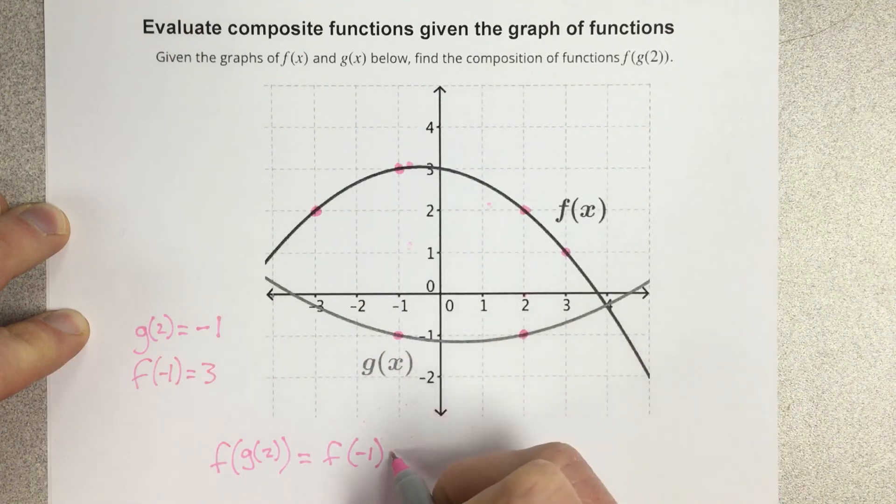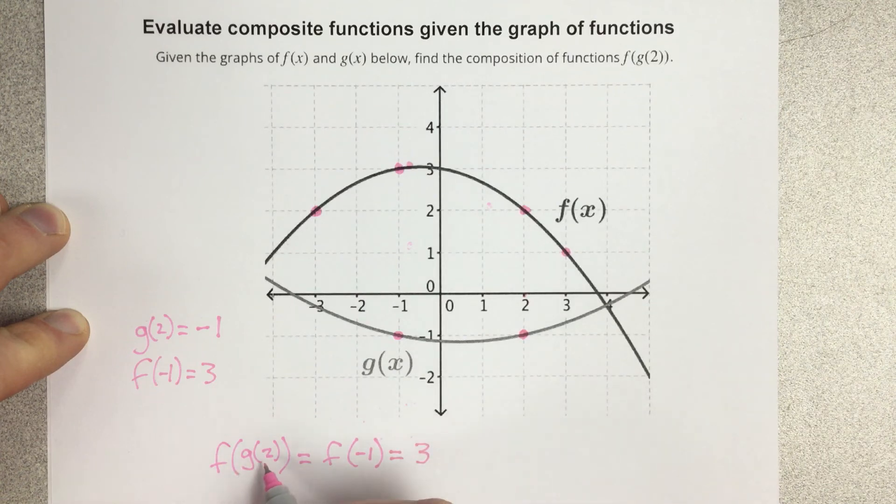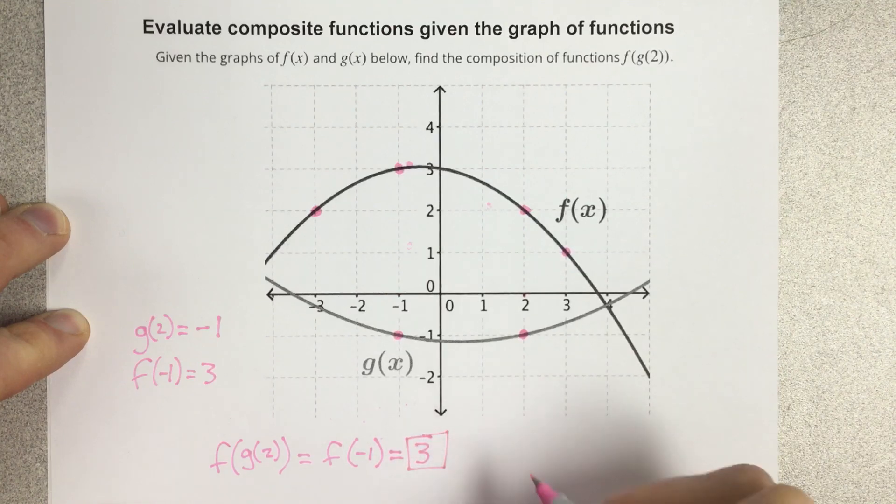So that means that I can now say the output of f of negative 1 is 3, which means f of g of 2, the composition of functions here, is equal to 3.